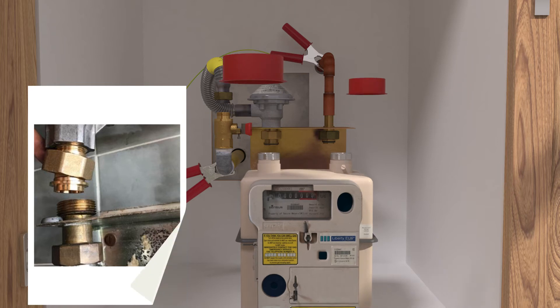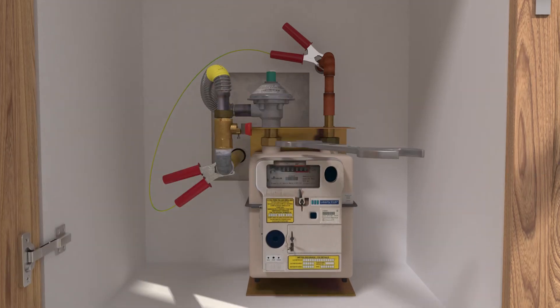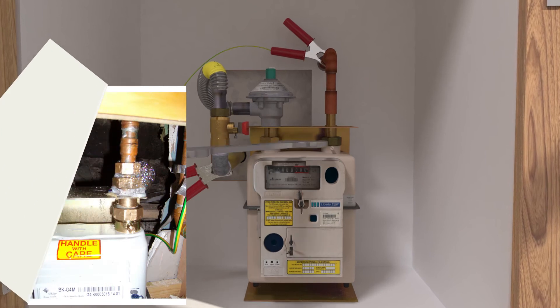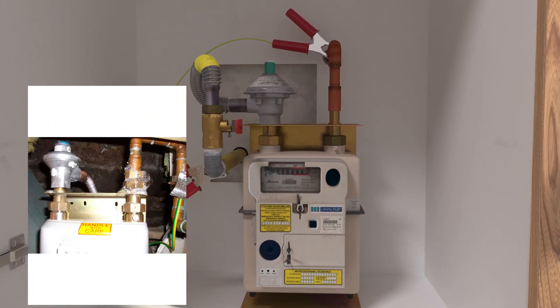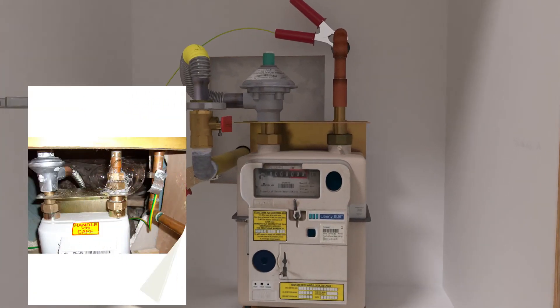Ensure all washers are in place and proceed to tighten the unions. It is essential that the unions are appropriately tightened. Incorrectly tightened unions have the potential to cause a leak.